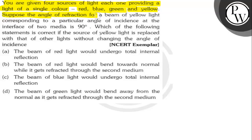Suppose the angle of refraction for a beam of yellow light corresponding to a particular angle of incidence at the interface of two media is 90 degrees. Which of the following statements is correct if the source of yellow light is replaced with that of the other lights without changing the angle of incidence? Let's find out.